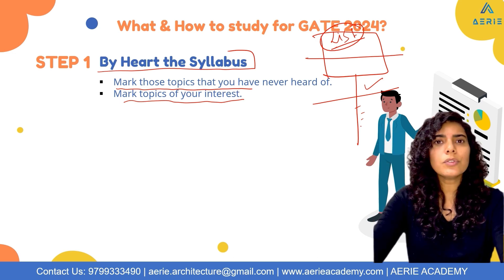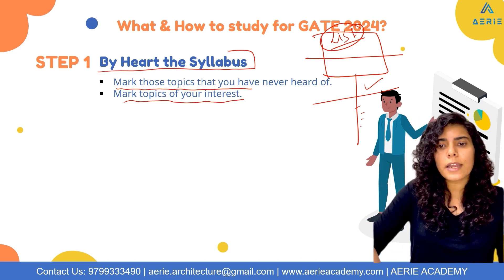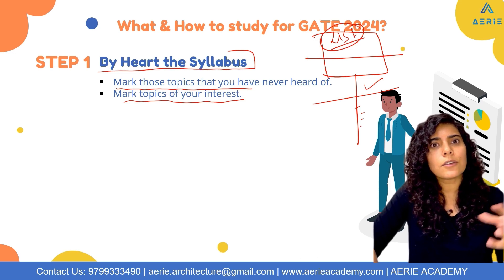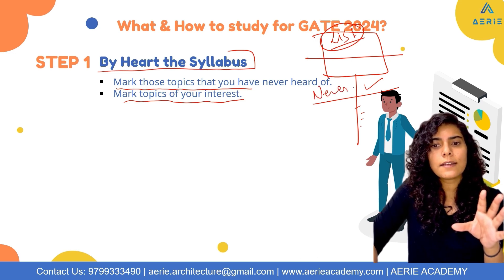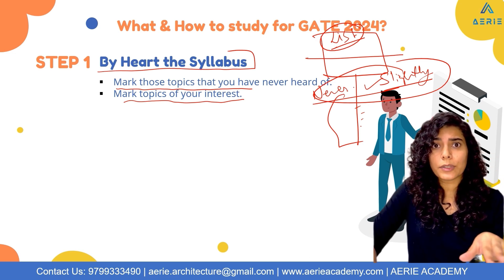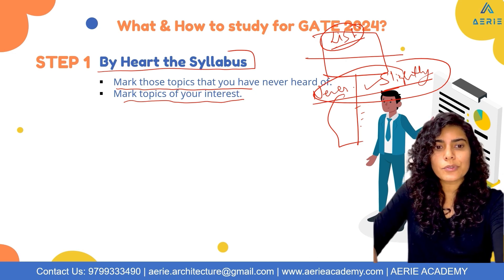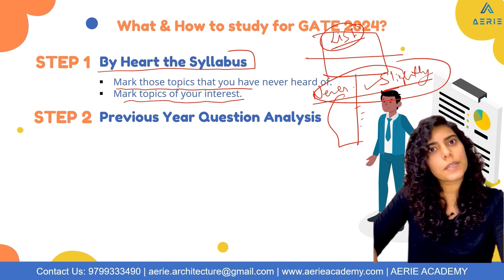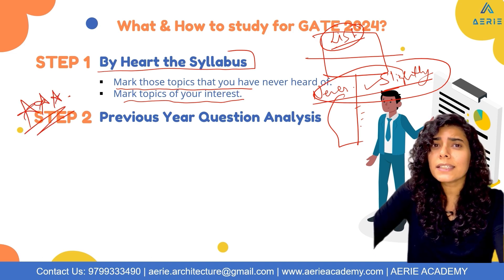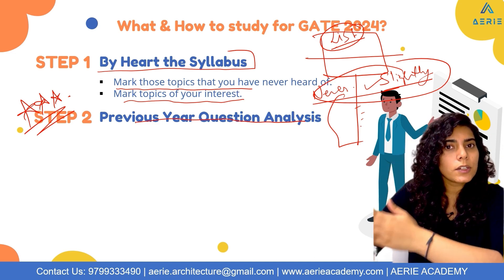Second, mark topics of your interest. For example, if you were very good in structures, write structures as a topic of interest. If you're fond of history or planning, add those too. Make two lists: one for topics you've never heard of, and one for topics you have at least a little idea about or studied in class. I'll tell you why to do this homework.